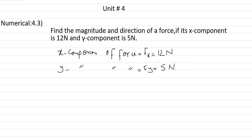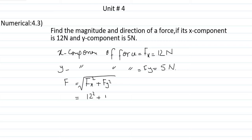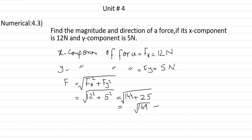Force is a vector quantity so we need to describe its magnitude and direction. The magnitude of force is given by F = √(Fx² + Fy²). Putting in values: √(12² + 5²) = √(144 + 25) = √169 = 13 newton. So the magnitude of force is 13 newton.